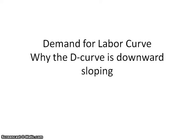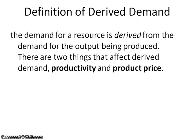In the last screencast, we defined derived demand, and then we also looked at the factors that shift the resource demand curve. Usually, the resource demand curve that we're talking about is the labor curve, so I'm just going to refer to that from here on out. One more time to review: the demand for a resource is derived from the demand for the output being produced.